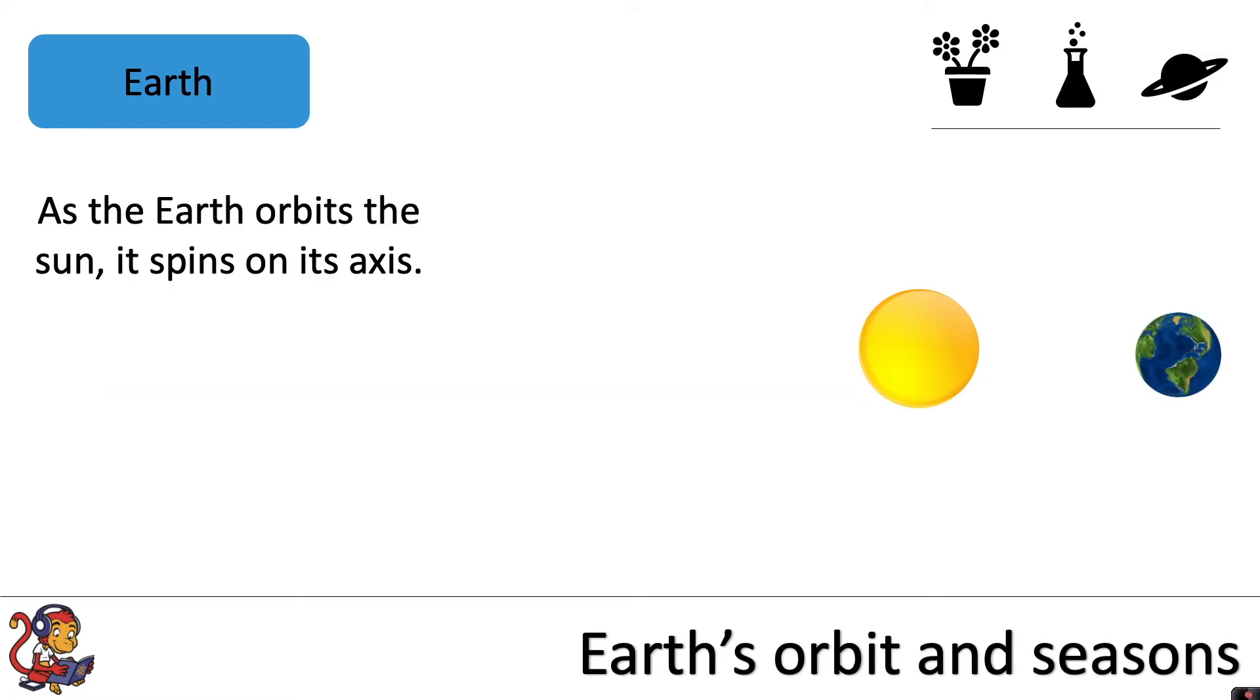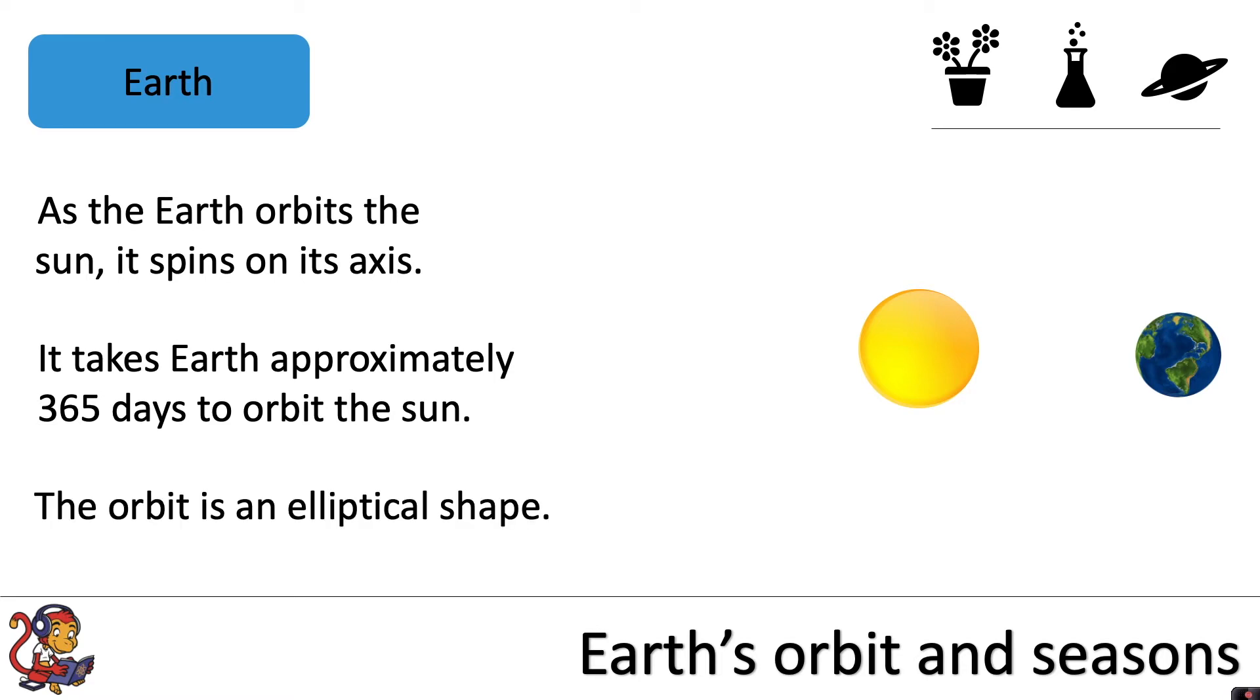As the earth orbits the Sun, it spins on its axis. It takes earth approximately 365 days to orbit the Sun, and the orbit is an elliptical shape.